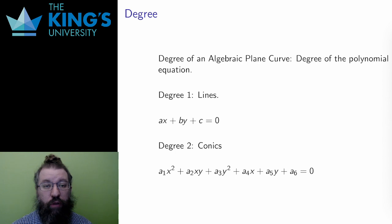An algebraic plane curve has a degree, which is the same as the degree of the polynomial. I hope you are familiar with the degree of a single variable polynomial. It's the highest exponent. For these two variable polynomials, the degree is the highest sum of the x and y exponents in an individual term.